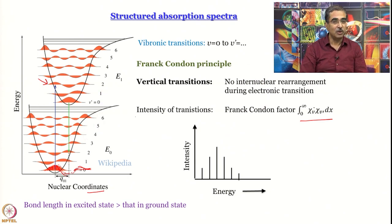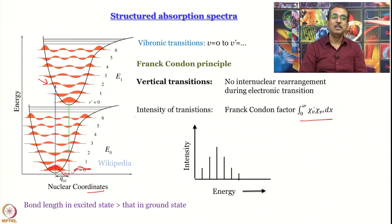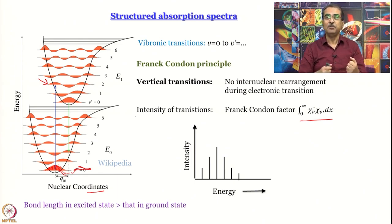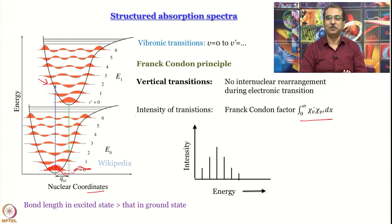If you remember the absorption spectrum of benzene, it does go through a maximum because this is the situation for benzene. Of course benzene is not a diatomic molecule — it is a polyatomic molecule — so the nuclear coordinate is not simply an internuclear separation.